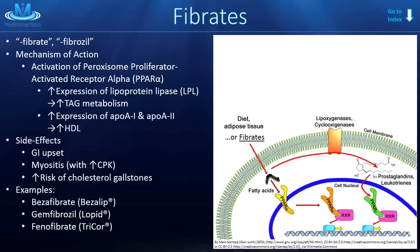Now, the fibrates. These drugs are pretty easy to pick out in a group because they end in 'fibrate' or 'fibrozil.' They are often given in combination with statins because there's not a lot of good evidence to support using them alone. Their mechanism of action involves stimulating or activating the peroxisome proliferator-activated receptor subtype alpha, abbreviated PPAR-alpha. Don't confuse this with PPAR-gamma, which is stimulated by the thiazolidinediones used for diabetes. When we stimulate PPAR-alpha receptors with fibrates, we change the metabolism of carbohydrates and fatty acids.